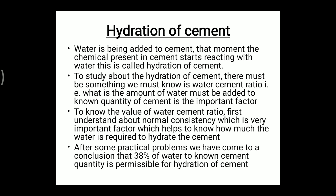When it comes to hydration of cement — cement mixing with water, producing products, and evaporating heat — that process is called hydration of cement. To understand hydration, we must know the water-cement ratio: what amount of water must be added to a known quantity of cement. The important factor to know first is normal consistency, which helps determine how much water is required to hydrate the cement.